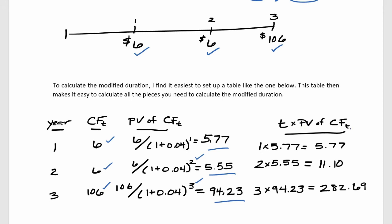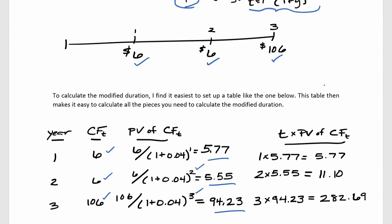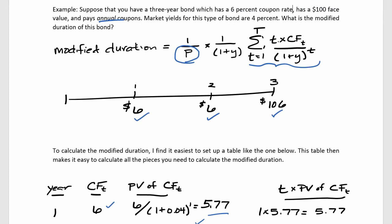The final column in this table is t times the present value of the cash flows received at time t. The reason I'm calculating this is because I am calculating this entire quantity in the modified duration formula, and then we're going to sum over all the time periods.